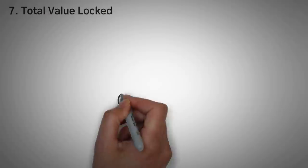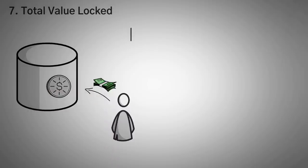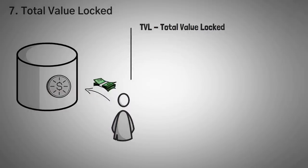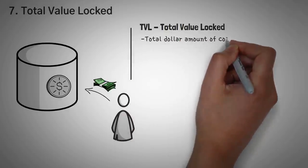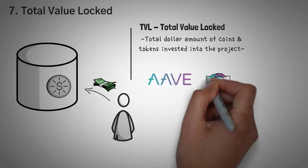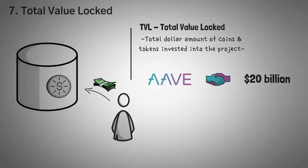Lastly, for number seven, we have a metric called Total Value Locked. In terms of investing in a project and not a specific coin, you can actually check out a metric called TVL or Total Value Locked. TVL is the total dollar amount of coins and tokens invested into the project. For example, Aave, which is a well-known blue chip borrowing and lending platform, has over $20 billion invested in it.